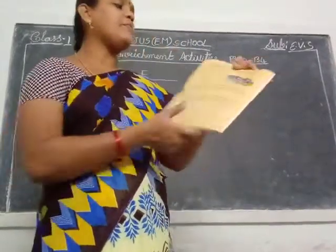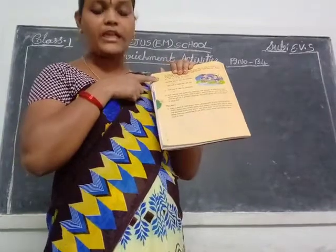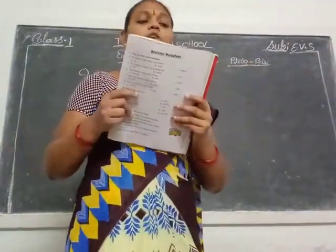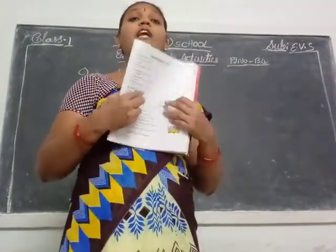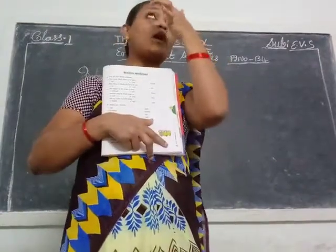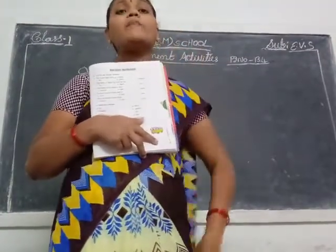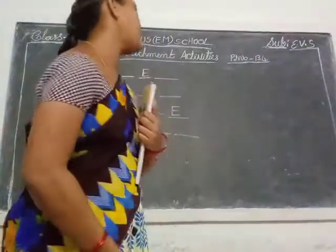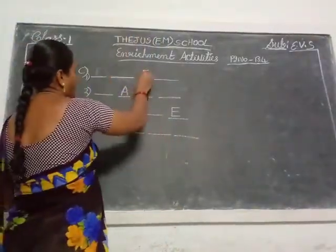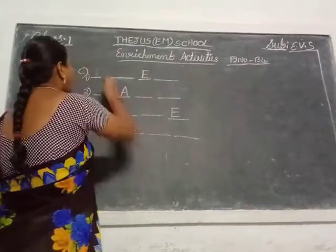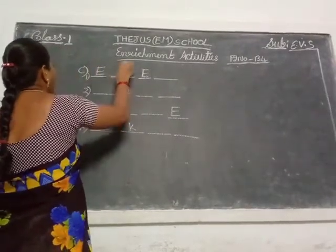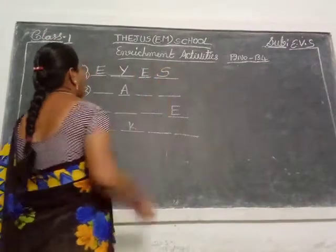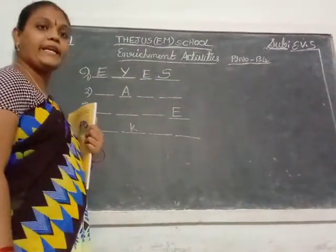Here four clues are there. First clue: we help you to see the clouds. Seeing — which one helps you in our sense organs? Eyes. Eyes can see. What is the eyes spelling? E-Y-E-S. Eyes.